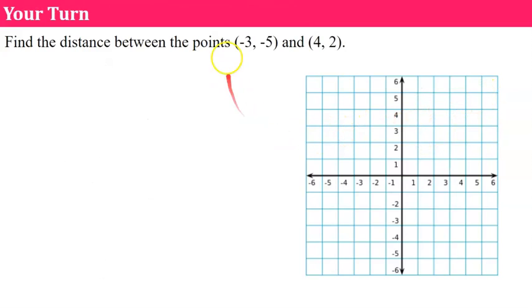Now it's your turn. I would like you to plot these points, form a right triangle, and use the Pythagorean Theorem to find the distance between the two points. Come back and hit play when you're done.